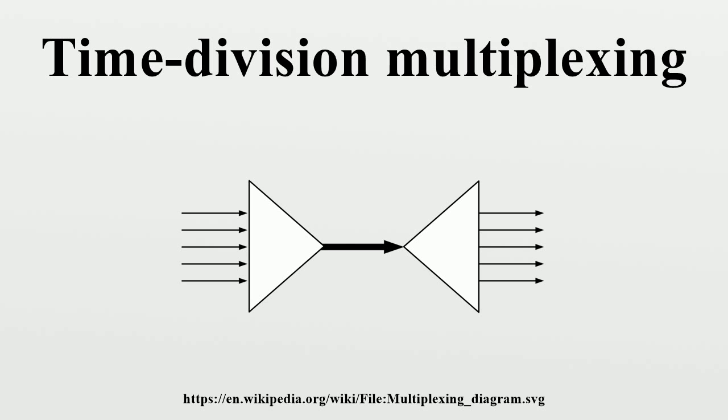The RIF audio standard interleaves left and right stereo signals on a per sample basis. TDM can be further extended into the time division multiple access scheme, where several stations connected to the same physical medium, for example sharing the same frequency channel, can communicate.